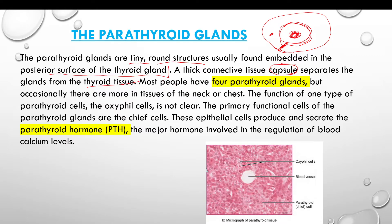Most people have four parathyroid glands. Occasionally there are more, found in tissues of the neck and chest, but that is rare.